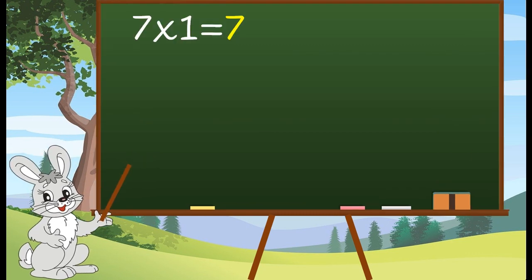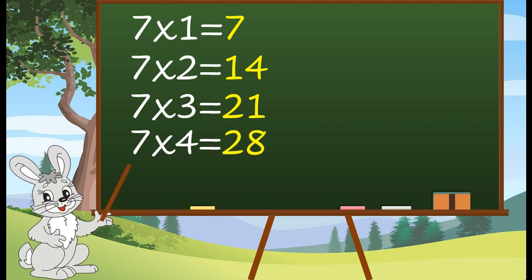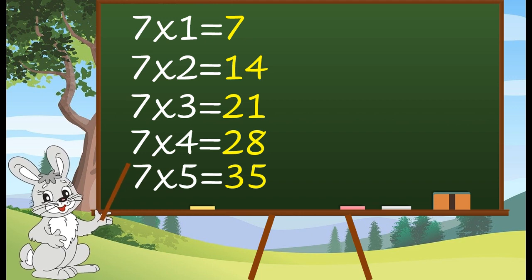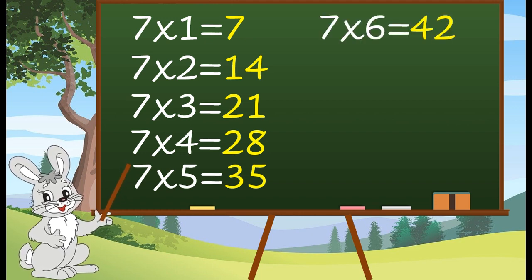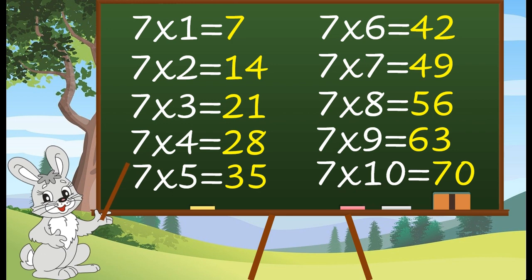7 1's are 7. 7 2's are 14. 7 3's are 21. 7 4's are 28. 7 5's are 35. 7 6's are 42. 7 7's are 49. 7 8's are 56. 7 9's are 63. 7 10's are 70.